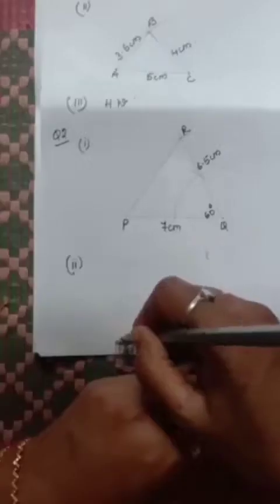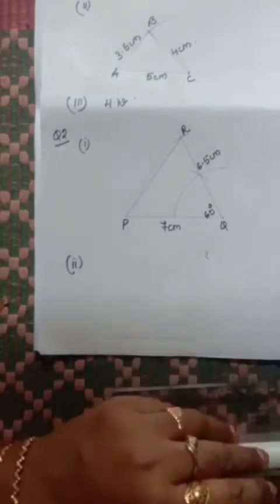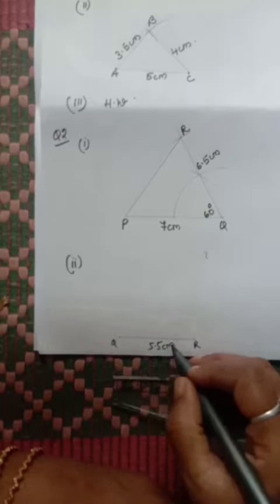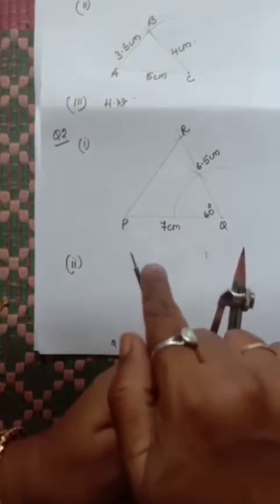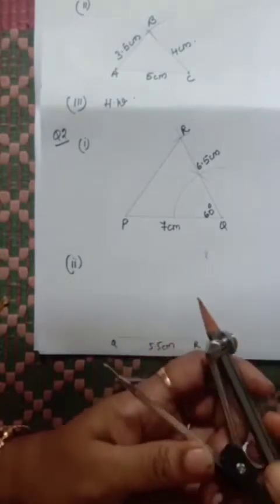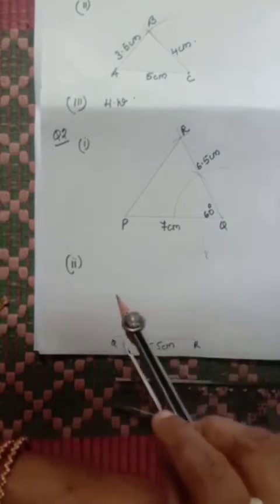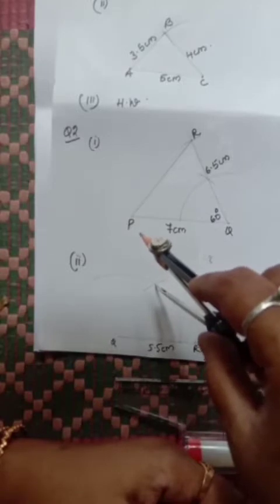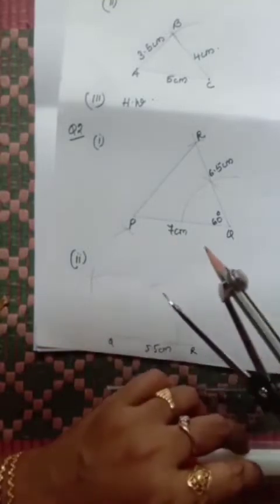Question 2, Part 2: Draw QR = 5.5 cm as the base, since angle Q is given. From Q you have to draw 75°. We take QR as the base first, then construct the 75° angle at Q.